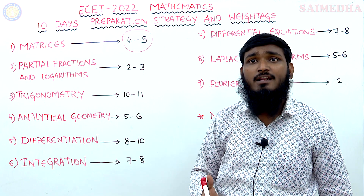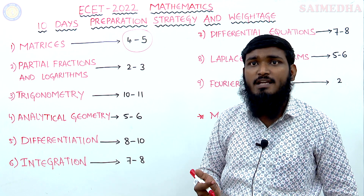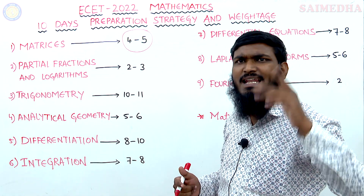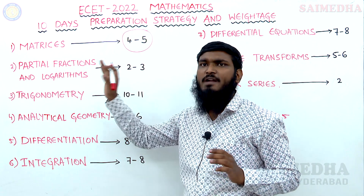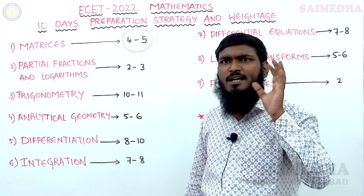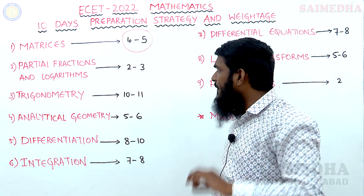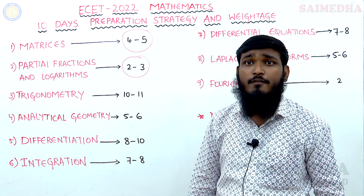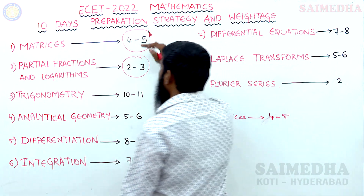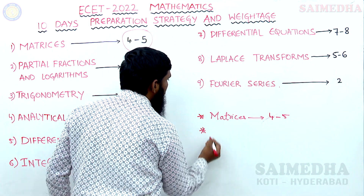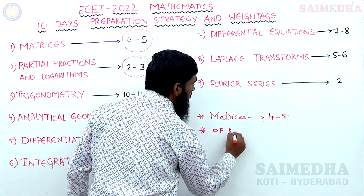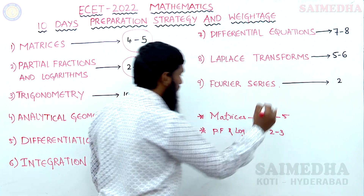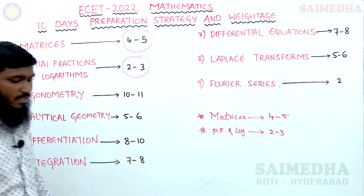Why do we go for Partial Fractions and Logarithms early? Because there are only 10 to 12 models in Partial Fractions as well as Logarithms. Since it is a very simple and easy topic, we can surely score 2 to 3 marks from these two topics. This is very important — listen carefully to which topics you have to cover first.